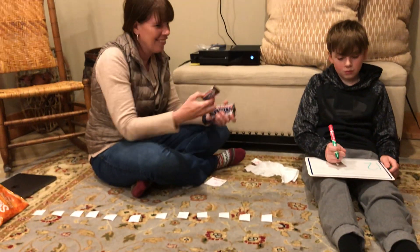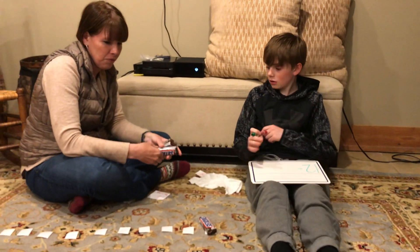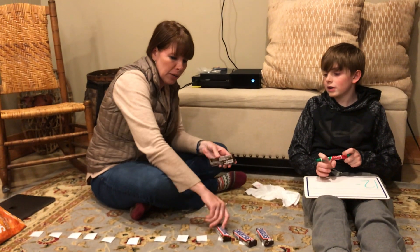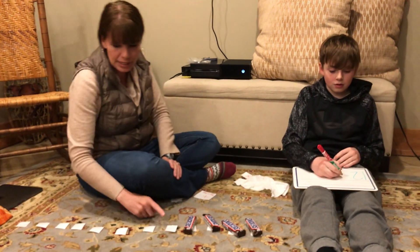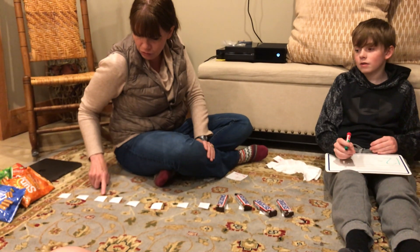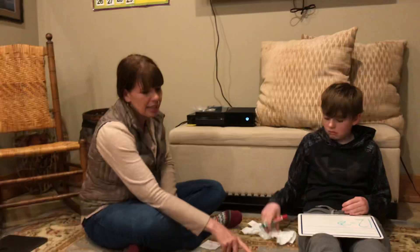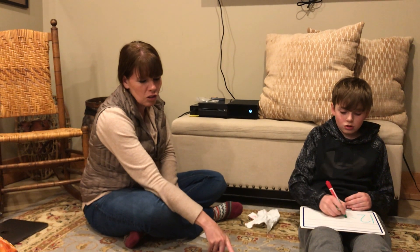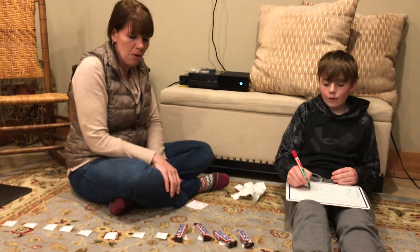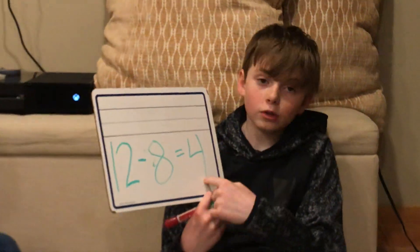Sam, can you see us on that? Okay, sorry, I'll pull back. Ready? Now we're going to do a minus because we're going to see how many are missing. One, two, three, four. So how many are missing? One, two, three, four, five, six, seven, eight. Twelve minus eight equals one, two, three, four. Twelve minus eight equals four. Awesome.